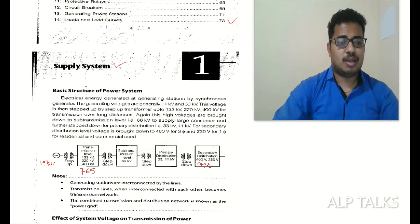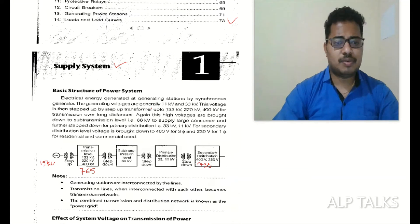Basic structure of power system: electrical energy generated at generating stations by synchronous generators. The generating voltages are generally 11 kV and 33 kV. This voltage is then stepped up by step-up transformer up to 132 kV to 400 kV or 765 kV for transmission over long distances.